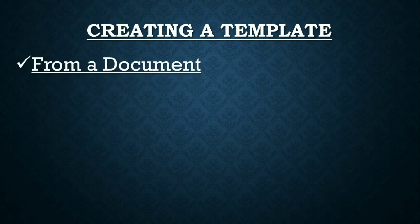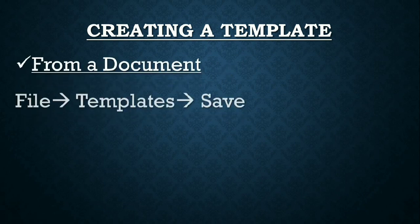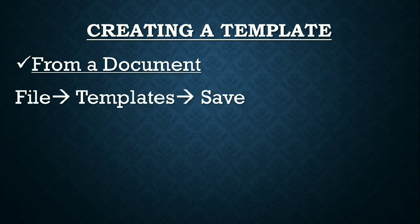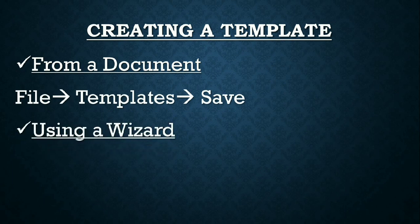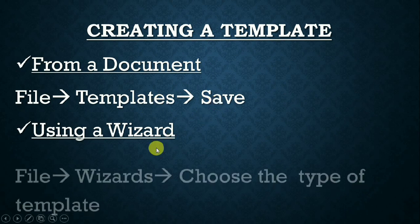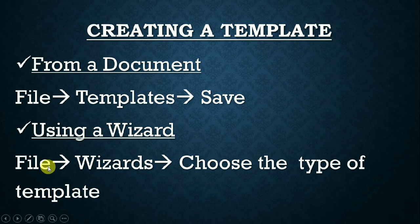Now to create a template, we have two ways. One is from a document and one is using a wizard. For the first method, you go to the file menu, then go to the Templates option, and then click on the Save option. For the wizard option, you click on the file menu, there is an option called Wizards, and then you choose a type of template.